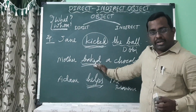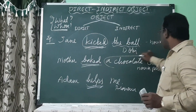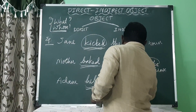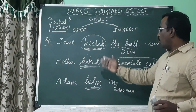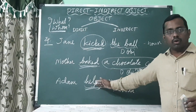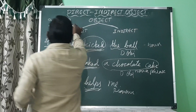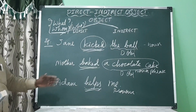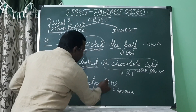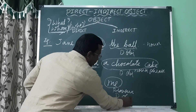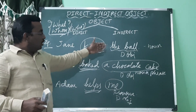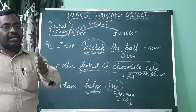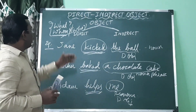What is baked? A chocolate cake — a chocolate cake is the direct object. Can we ask 'what is helped'? No. We ask 'whom' or 'who is helped' — me. So me is the direct object. A noun, pronoun, or noun phrase that receives the action of a transitive verb is a direct object.